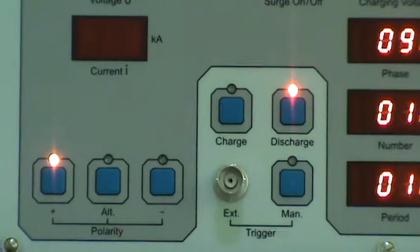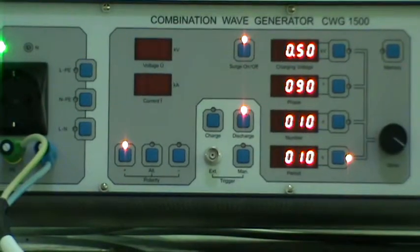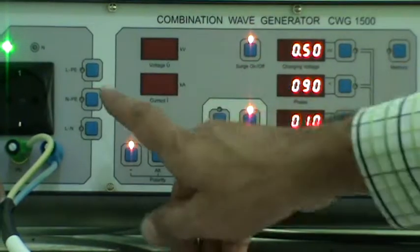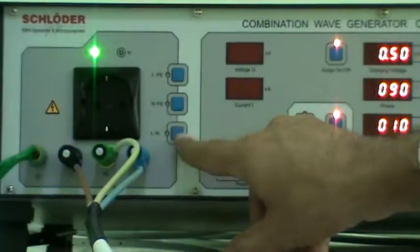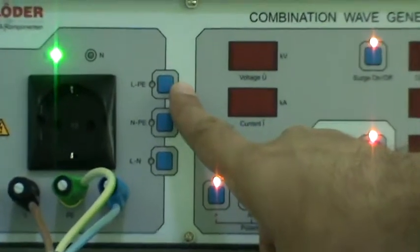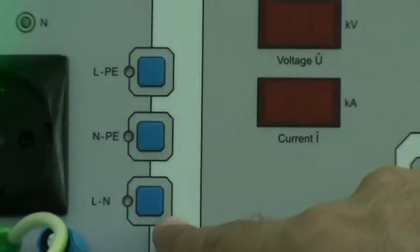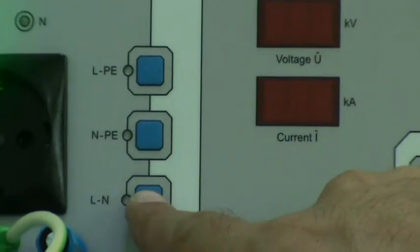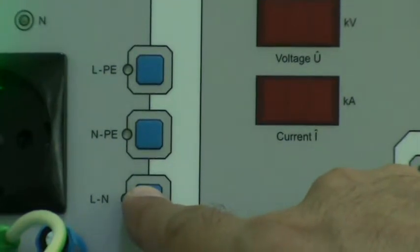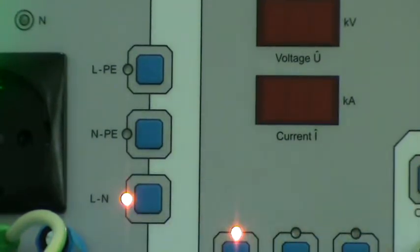After selecting the polarity we have to select the coupling mode with the help of these three buttons. Here it is line to protective earth, neutral to protective earth, and line to neutral. Now we are selecting the coupling mode as between line and neutral. By selecting this button we are coupling the energy in line and neutral line.